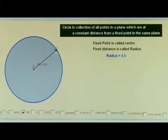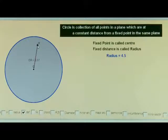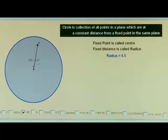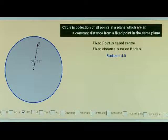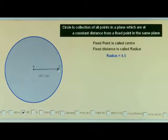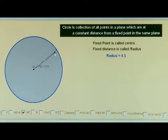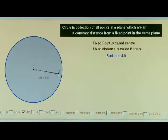Let me take the point R inside the circle. The distance of point R from the center, OR, is 3.37, which is less than the radius. As long as the point R remains inside this circle, the distance of this point R from the center will always be less than 4.5, the radius of the circle.